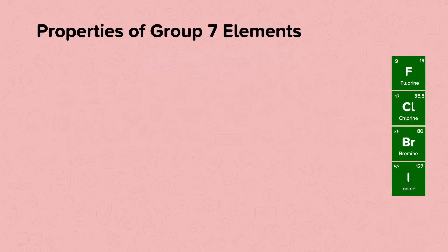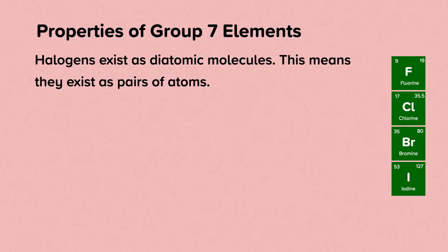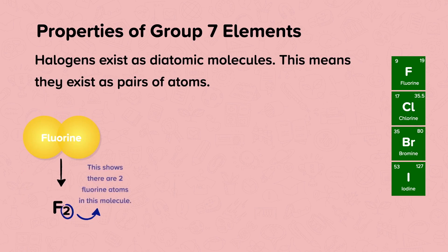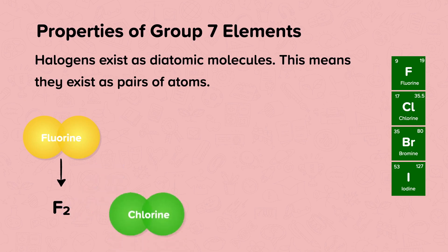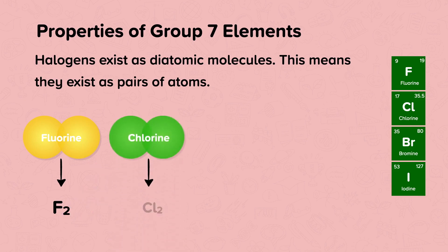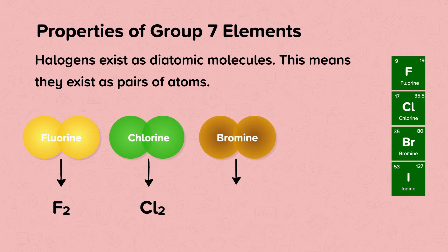Halogens exist as diatomic molecules, meaning they exist as pairs of atoms. So the symbol for fluorine gas is F₂, showing there are two fluorine atoms in this molecule. Chlorine forms Cl₂, bromine forms Br₂, and iodine forms I₂.